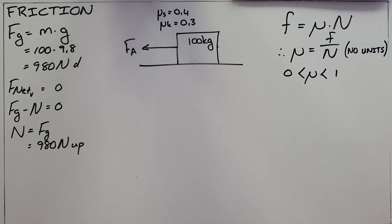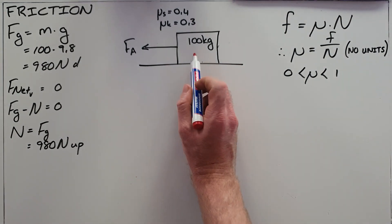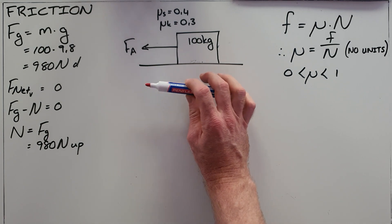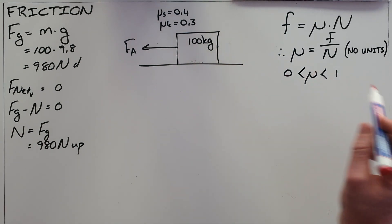In a typical example as we have here, a hundred kilogram object with an applied force attempting to move the object to the left. In order to start this object moving, it is first necessary to overcome the static friction.